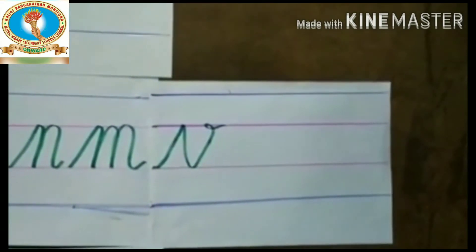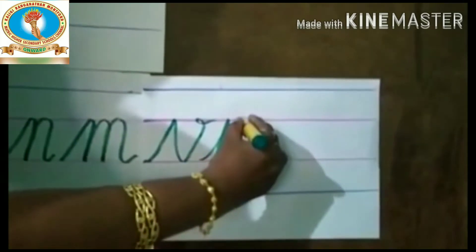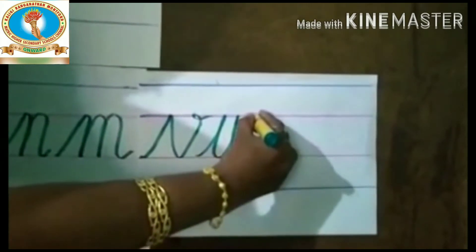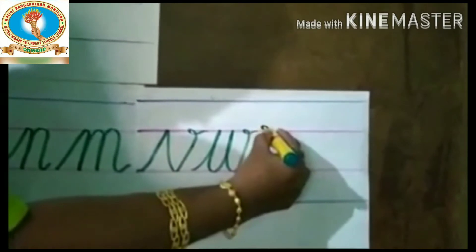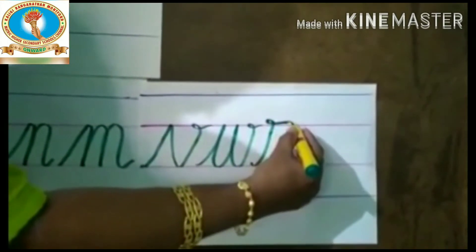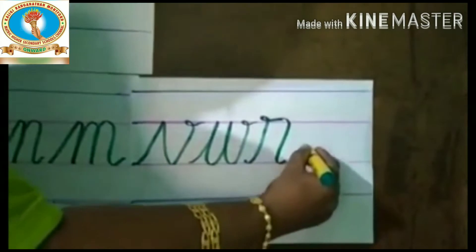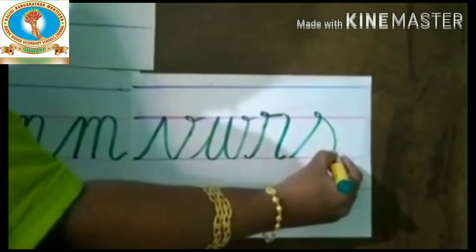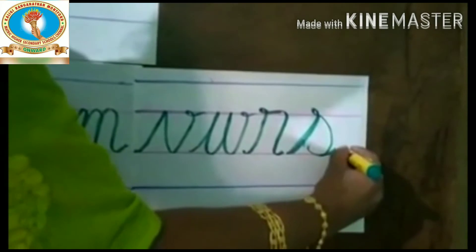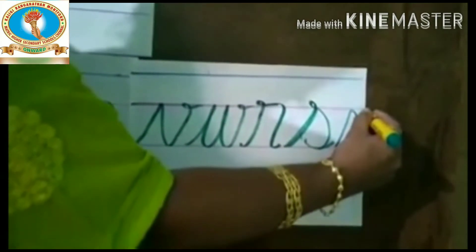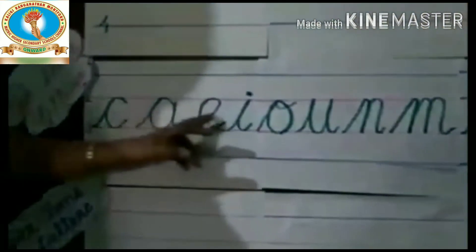The next letter is W. Start with the slanting line, come down, again go up, again press the third line, go up, and small loop. W. Slanting line, a small curve, then press the second line, and come down. The next one is Y: slanting line, a small round, again put the bump. Yes. Put the slanting line, go up, and put the C on the back side. Yes. These are the mid zone letters. The 13 letters come in the mid zone.